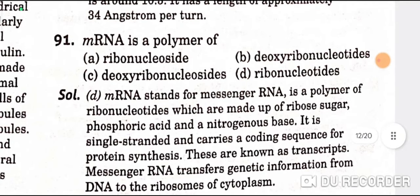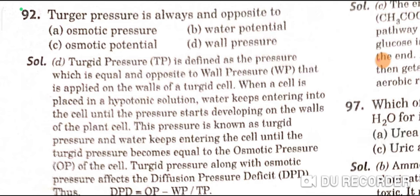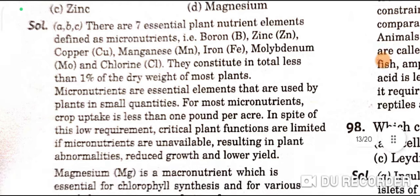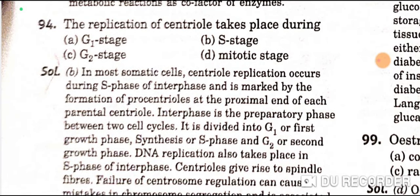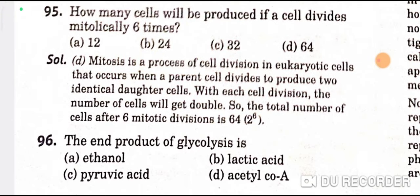mRNA is a polymer of ribonucleotides — D is the correct option. Turgor pressure is always equal and opposite to wall pressure — D is the correct option. The micronutrients include copper, boron, and zinc — C (i.e., all of ABC) is the correct option. The replication of centrioles takes place during the S stage — B is the correct option. If a cell divides mitotically 6 times, 64 cells will be produced. The end product of glycolysis is pyruvic acid.